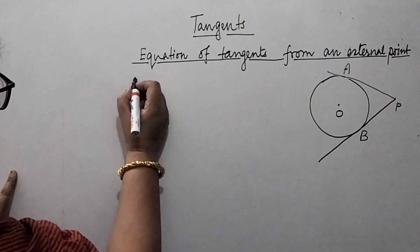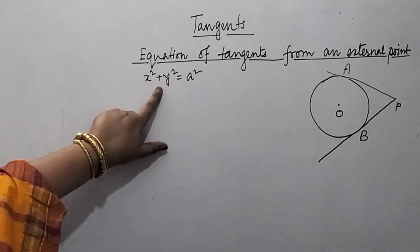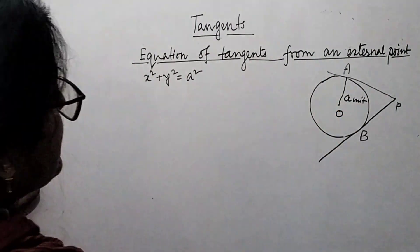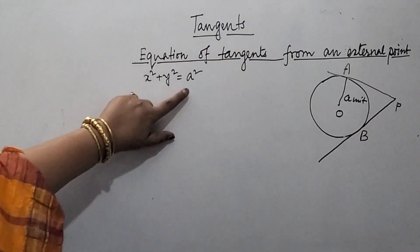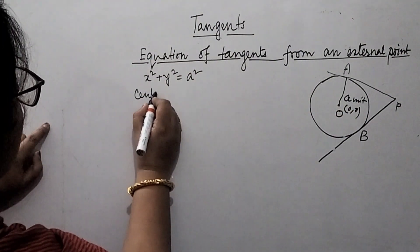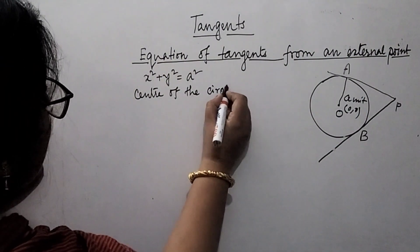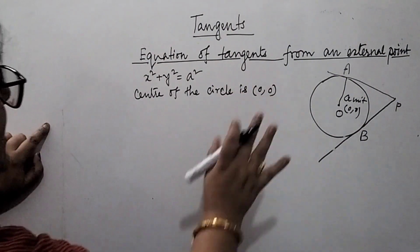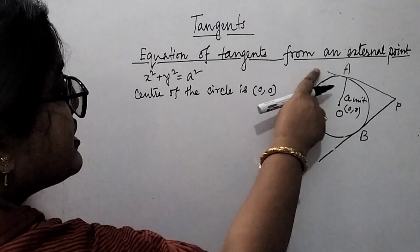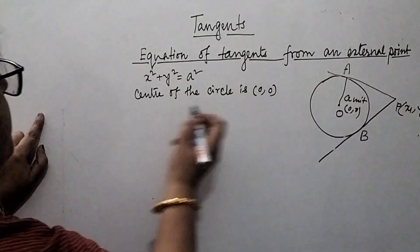Let the equation of the circle be x² + y² = a². The length of the radius is a, and the center is at the origin (0, 0). We are considering P as the external point from which the tangents are drawn, with coordinate (x₁, y₁). Let Q(h, k) be another point on either of the two tangents.